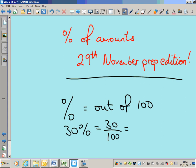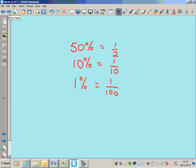Of course, you can simplify 30 out of 100 to 3 tenths. We established that if you can find 50% of something, or 10% of something, or 1% of something, you can use those amounts in different combinations to find most percentages of most amounts.